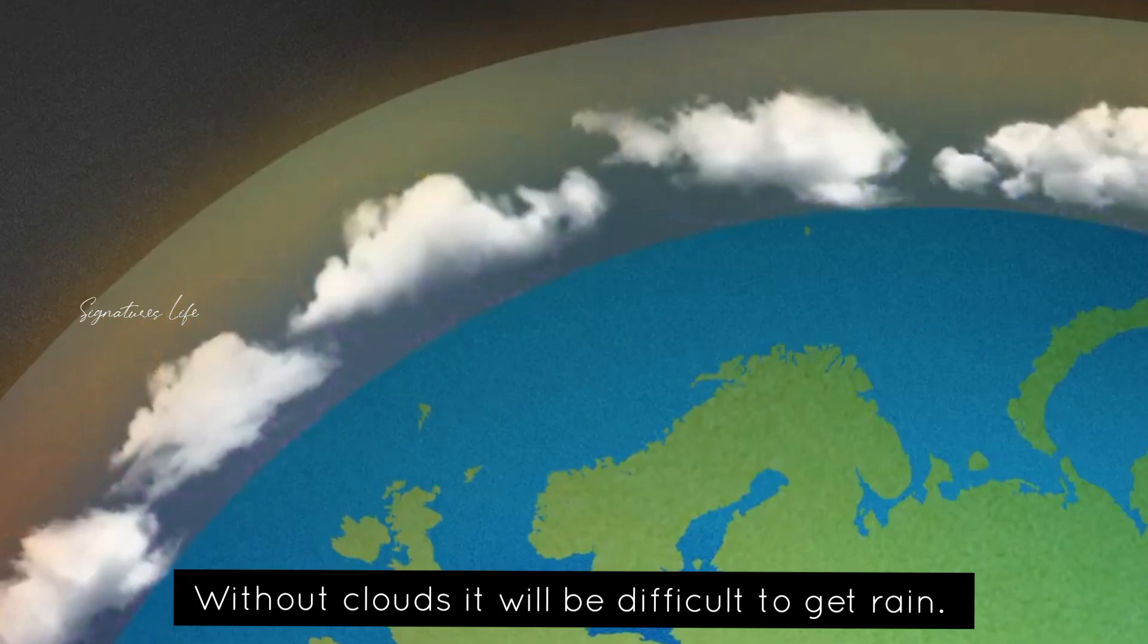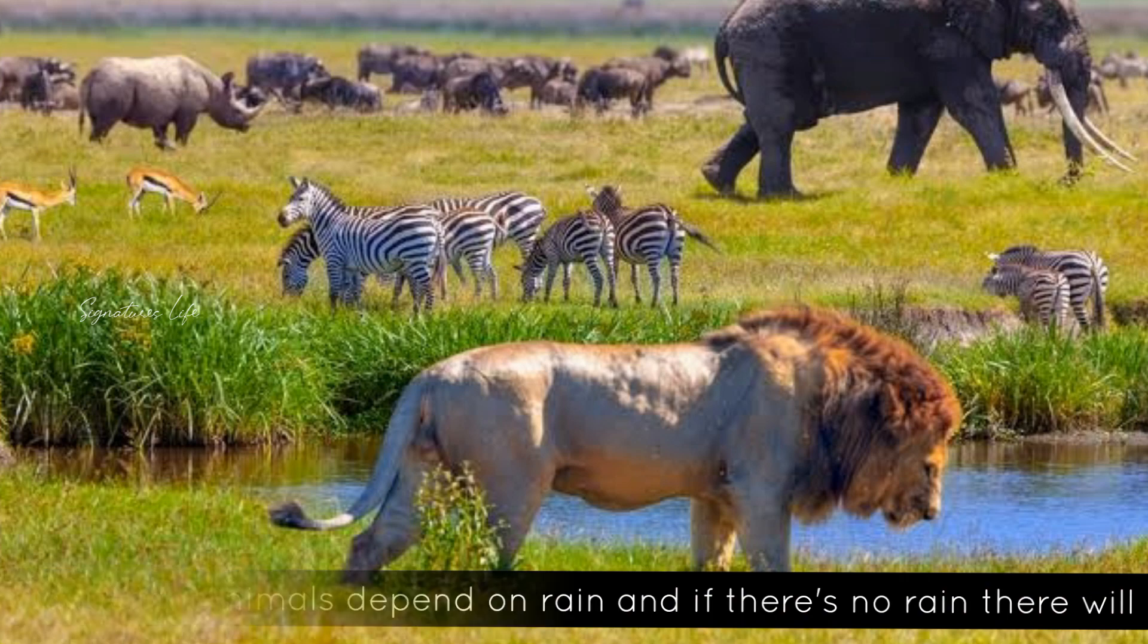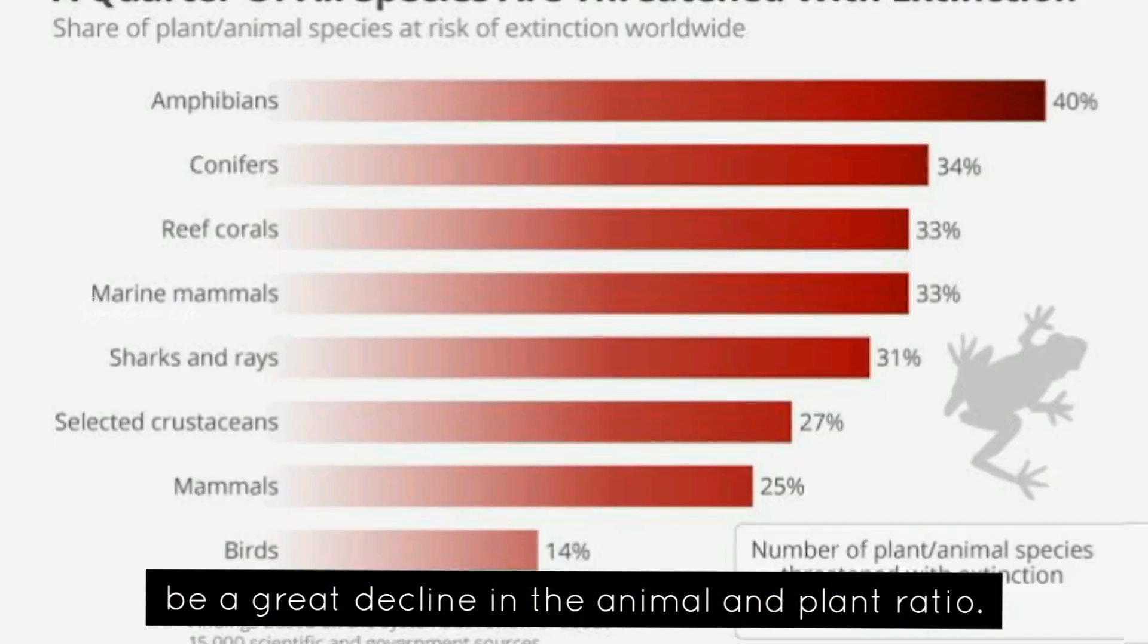Without clouds, it will be difficult to get rain. Plants and animals depend on rain, and if there's no rain, there will be a great decline in the animal and plant ratio.